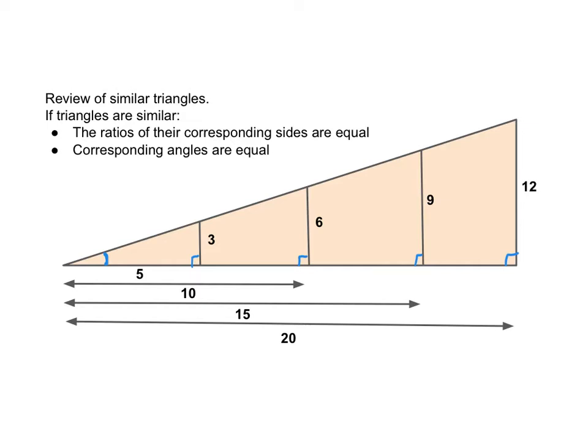If the triangles are similar, then what we need to do is look at the ratios of the corresponding sides. So I'm going to take a look at the ratio of the smallest triangle and those two sides. So that would be 3 over 5.